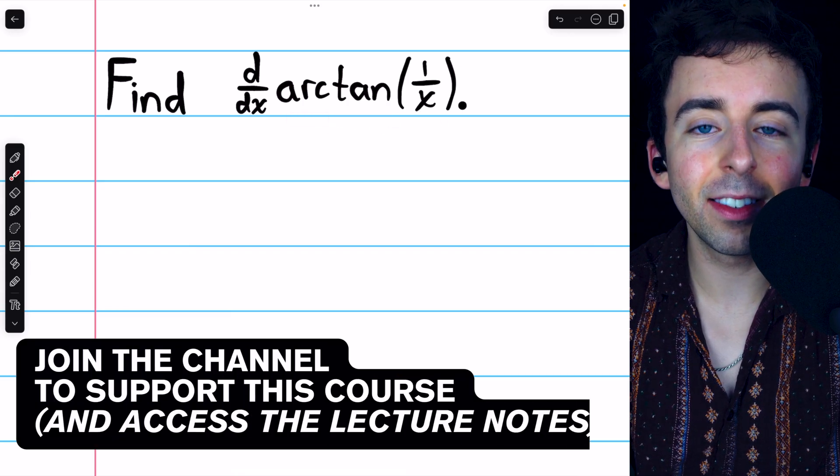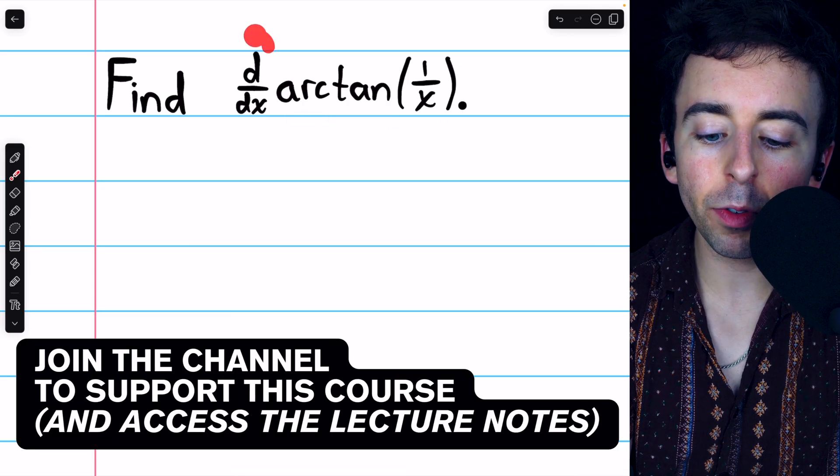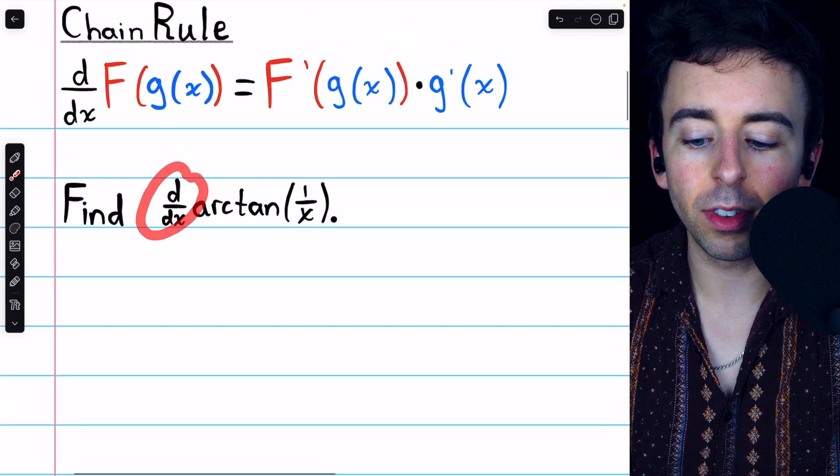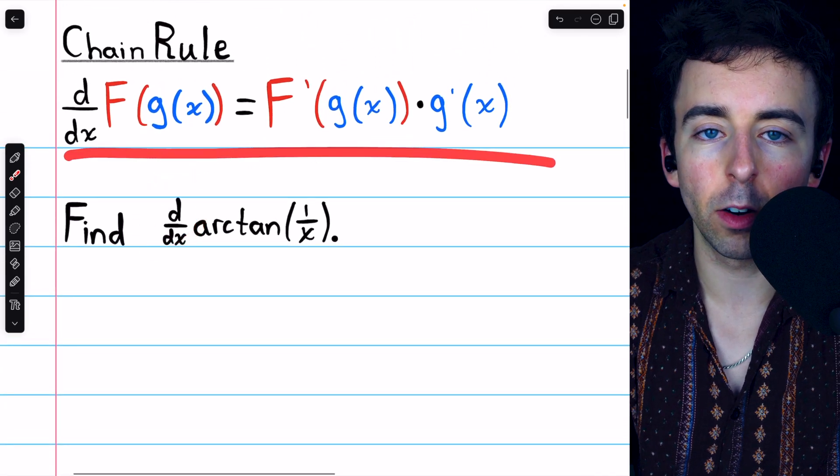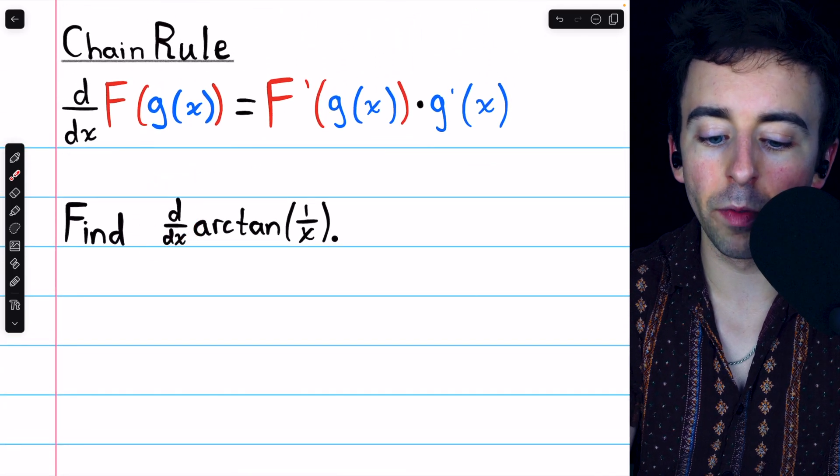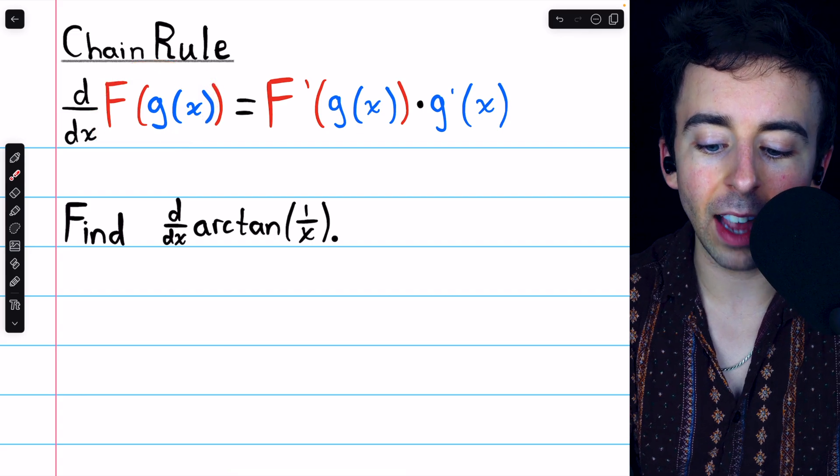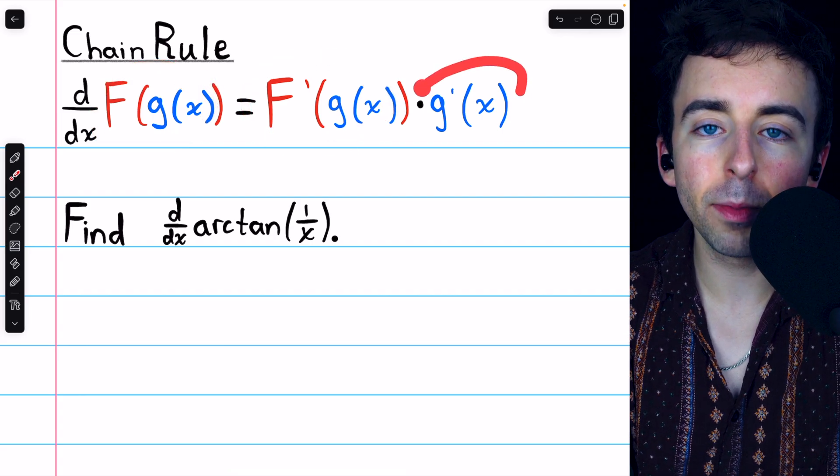Arctan of 1 over x is a composite function, so to find its derivative, we need to use the chain rule, which I've written here for your reference. The derivative of f of g is f prime of g times g prime.